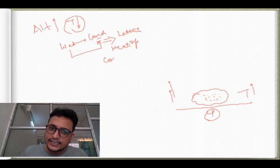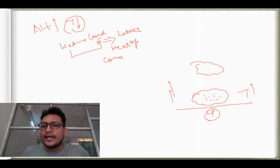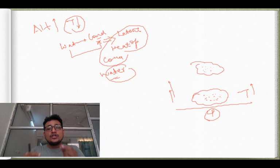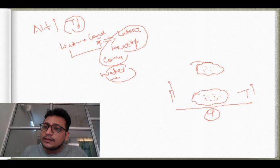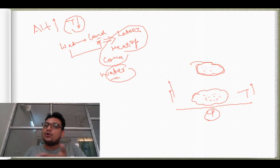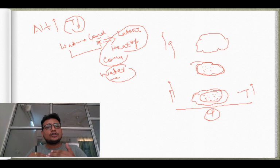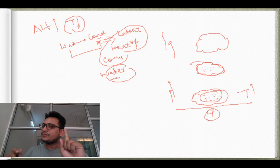The air parcel will keep rising as long as the water vapor inside it is condensing and releasing latent heat. As it rises, water vapor converts to water droplets — condensation starts, and clouds form. The more moisture inside, the denser the clouds. These are called thunderstorm clouds — cumulonimbus clouds. Cumulonimbus clouds will form only when moisture content is very high.